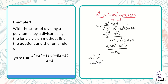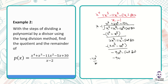We have -9x² and bring down -5x + 30. We divide -9x² by x, giving us -9x. We multiply -9x by x - 1, giving us -9x² + 9x. We subtract: -9x² cancels, and -5x - 9x gives us -14x. So we have -14x + 30.